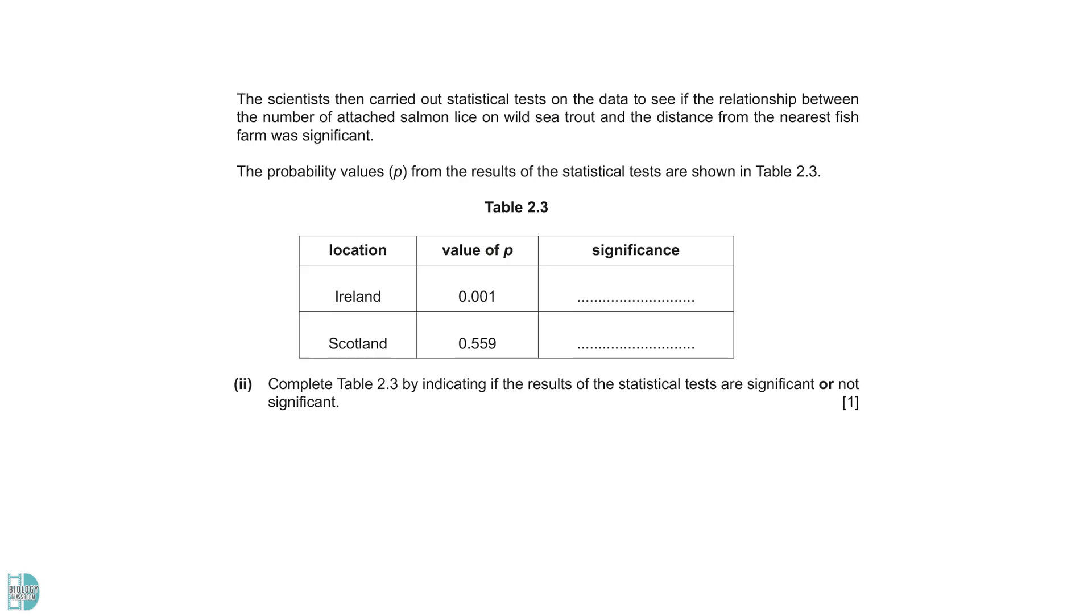Note that we always say that there is no significant correlation. You should not change this based on the data. The next question wants you to indicate if the results are significant or not significant. In a statistical test, if p, the probability value is greater than 0.05, we would accept the null hypothesis. So, we reject the null hypothesis for Ireland and accept it for Scotland. With that said, there is a significant difference for Ireland and it is not significant for Scotland.